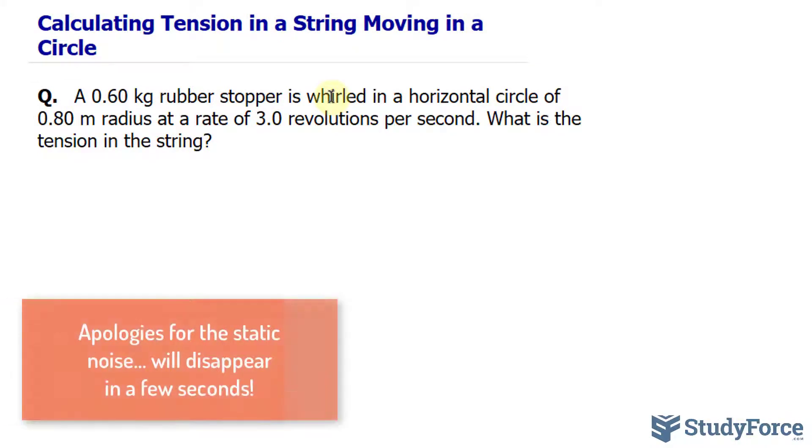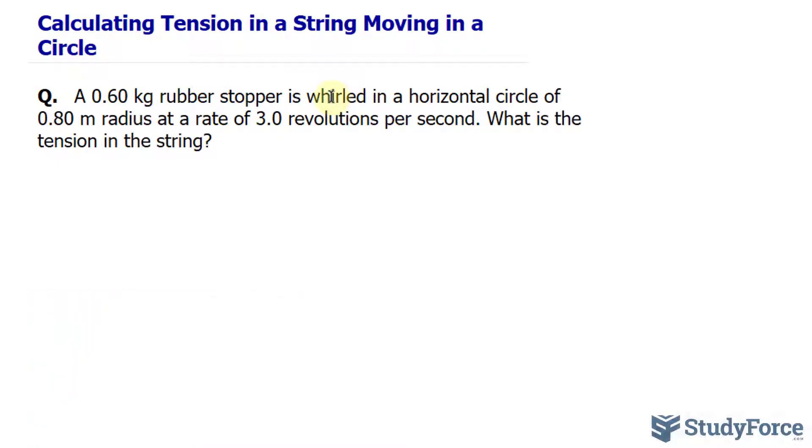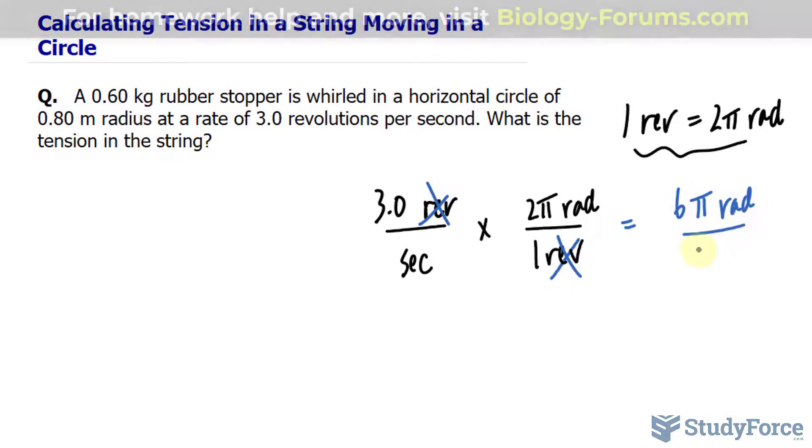The first thing that I'll do to tackle this problem is find the velocity using what we know about revolutions per second. So I'll write down 3.0 revolutions per second and convert that into radians, where 1 revolution is equal to 2 pi radians. So multiplying this by this conversion factor, where I put 1 rev at the bottom and 2 pi radians at the top, notice that the units will cancel out conveniently, giving us 6 pi radians per second.